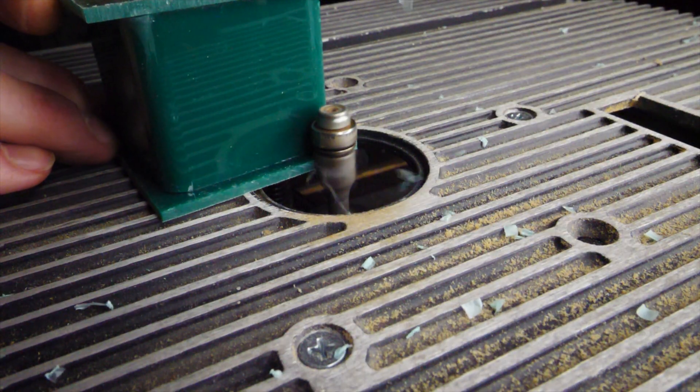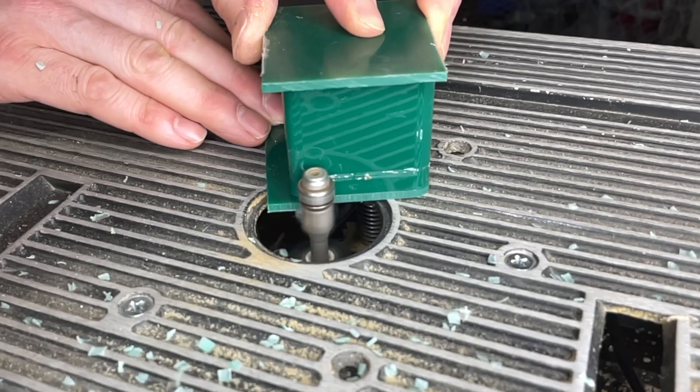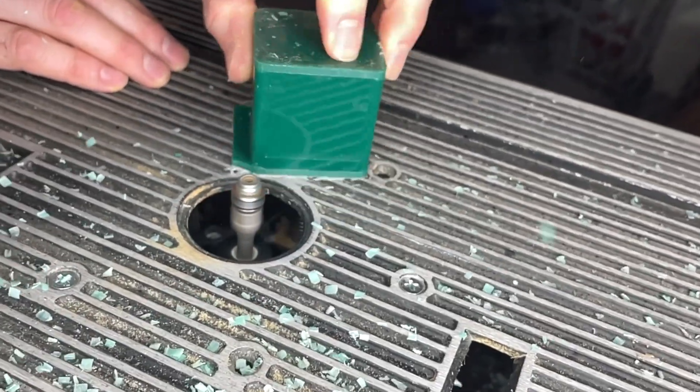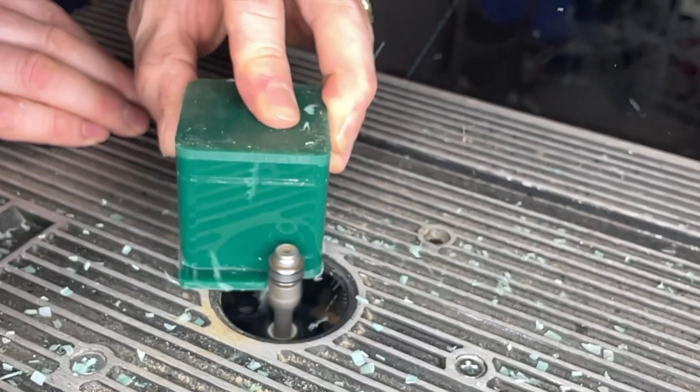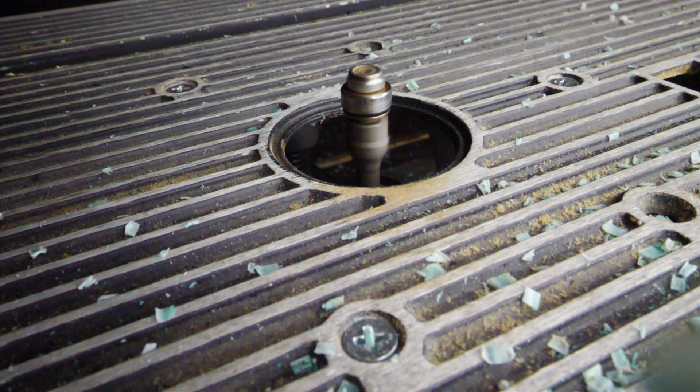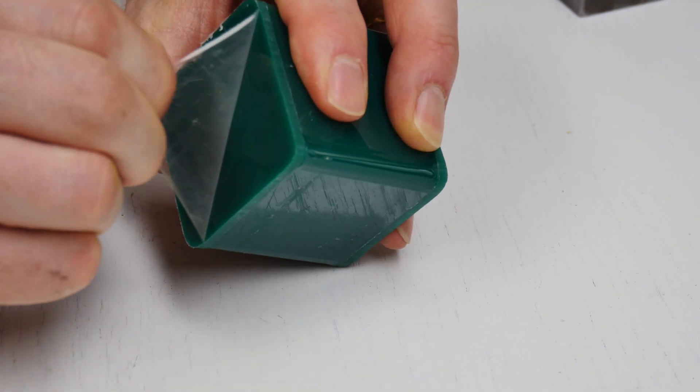During the flush cut process, the bearing actually starts to mar the acrylic. This is unfortunate on my end, but that's how it goes. Obviously this is not something you want, so you need to make sure that the bearing is lubricated properly and is of good quality. It's something that I'm going to have to clean up after.